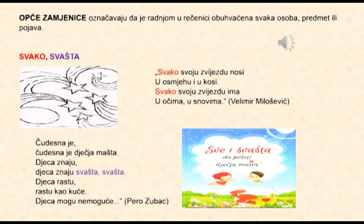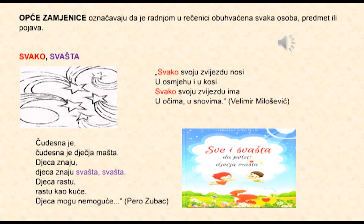Opće zamjenice su sljedeća vrsta imeničkih neličnih zamjenica i označavaju da je radnjom u rečenici obuhvaćena svaka osoba, predmet ili pojava, a njihovi oblici su svako za bića i svašta za stvari. Obratite pažnju na stihove Pera Zupca: Čudesna je, čudesna je dječja mašta, djeca znaju svašta. Djeca rastu kao kuće, djeca mogu nemoguće. I stihove Velimira Miloševića: Svako svoju zvijezdu nosi u osmjehu i u kosi, svako svoju zvijezdu ima u očima, u snovima.